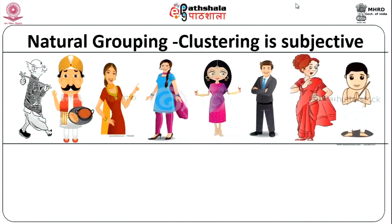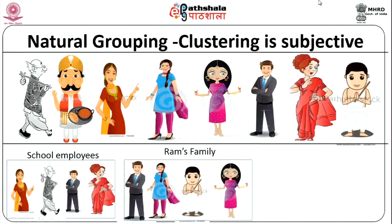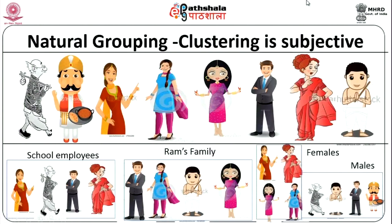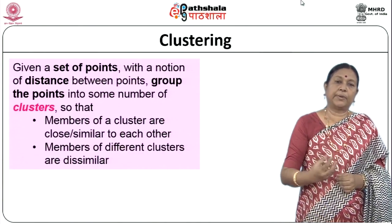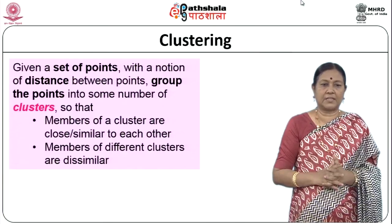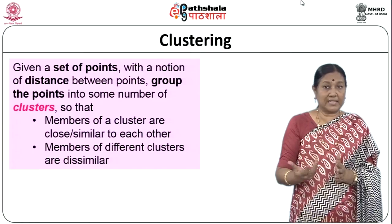Consider a set of people we want to group. One grouping could be that they are all employees of a school. Another grouping is that they all belong to Ram's family. Or we could group them by sex — females and males. So there are different groupings possible for the same set of people. Clustering is subjective, and this is a natural grouping example.